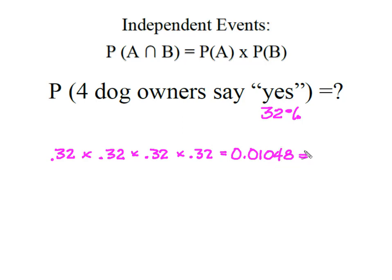So one of the things that we know about these independent events and this probability is I could have taken this 0.32 and simply raised it to the power of n, which was the number of trials.